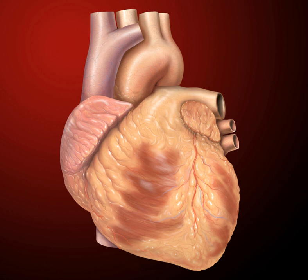The coronary sinus returns deoxygenated blood from the myocardium to the right atrium. The blood collects in the right atrium. When the right atrium contracts, the blood is pumped through the tricuspid valve into the right ventricle. As the right ventricle contracts, the tricuspid valve closes and the blood is pumped into the pulmonary trunk through the pulmonary valve.